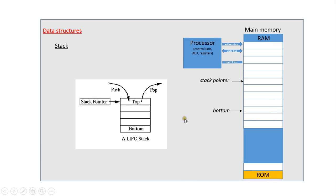A stack is a very common data structure. It has a fixed base, and as things join the stack the stack pointer moves up, and as they leave the stack the stack pointer moves down.